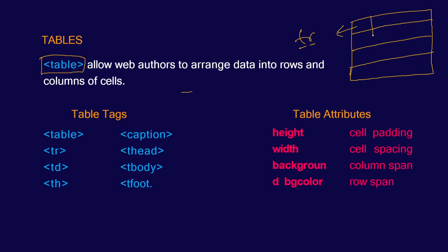To create columns you have the td tag, that is table data — whatever data you want to add inside a cell goes inside the td tag. Next you have the th tag, which is for table headings — whatever headings you want to give for your table. You also have the caption tag to give a caption for your table. Then there are three more tags: thead, tbody, and tfoot.